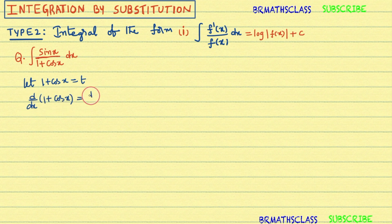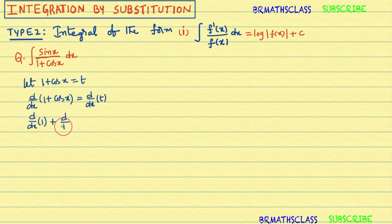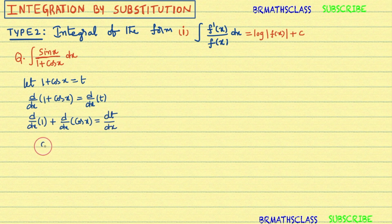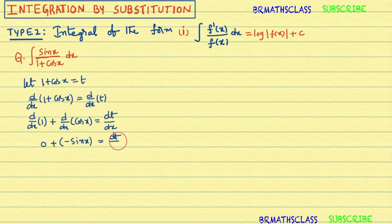Once you've set 1 + cos x = t, differentiate the complete equation with respect to x: d/dx of (1 + cos x) = d/dx of t. Differentiating each term: d/dx of 1 + d/dx of cos x = dt/dx. Derivative of 1 is 0, and derivative of cos x is −sin x, so −sin x = dt/dx.